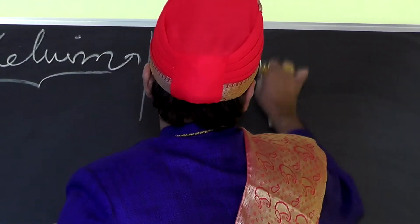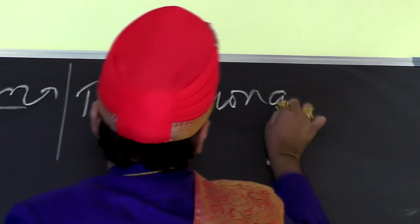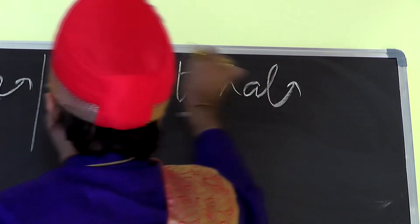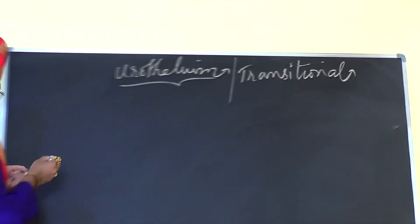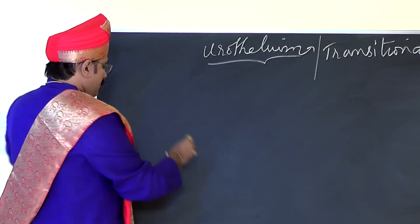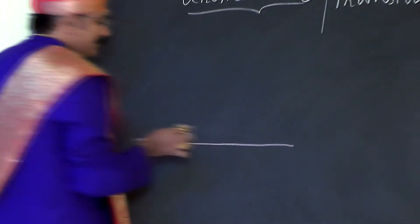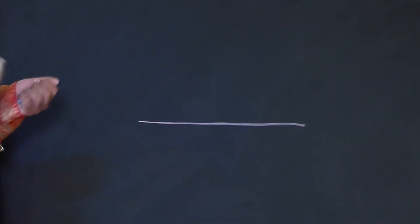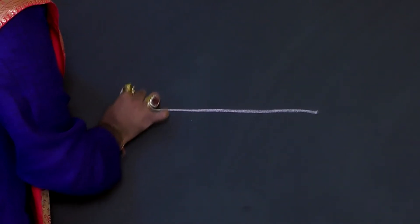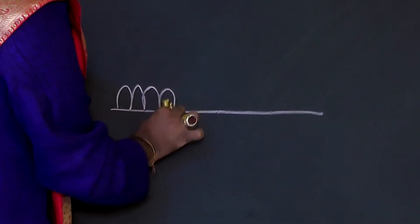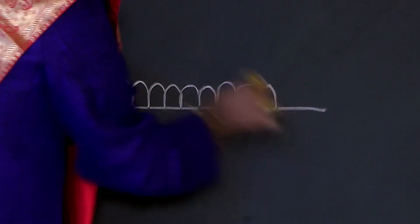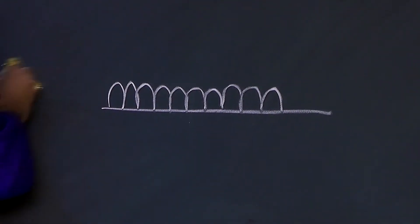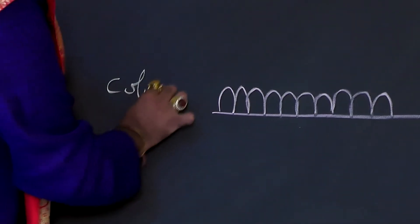This transitional epithelium is made up of four to six layers of cells. The first layer of cells on the basement membrane are called low columnar cells or cuboidal cells.